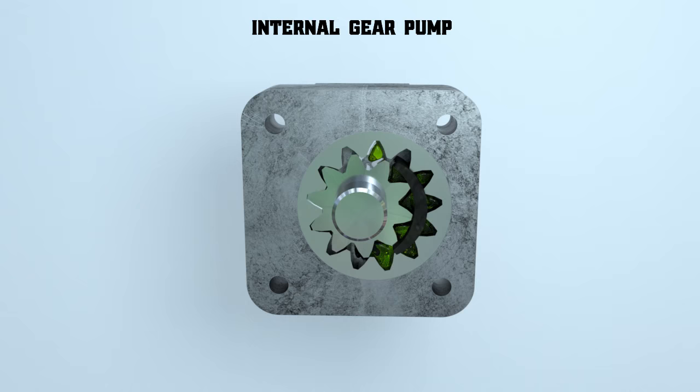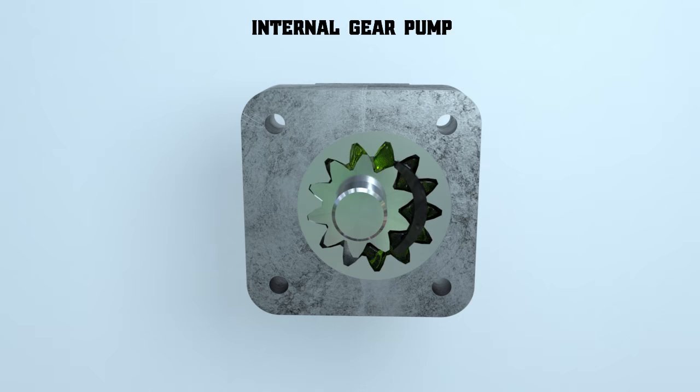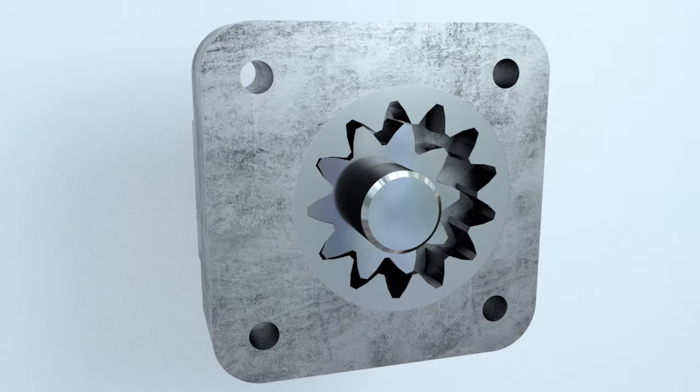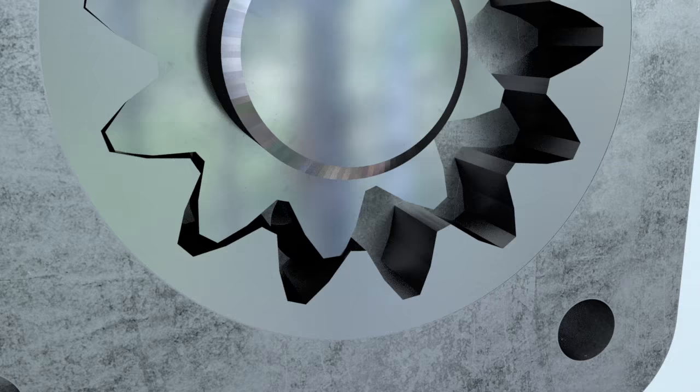Let's take a closer look at how an internal gear pump functions. The suction channel is located at the point where the gear teeth come out of the mesh, and the discharge channel is located at the point where they go into the mesh.